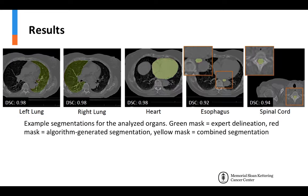This figure shows a representative case from the online testing phase of the Grand Challenge. As shown by the yellow-colored overlap between the two masks — green being the expert delineation and red being the algorithm-generated mask — our method produced highly accurate segmentations for all five structures. These results show that our approach is promising for future use in the clinic for treatment planning. Thank you.